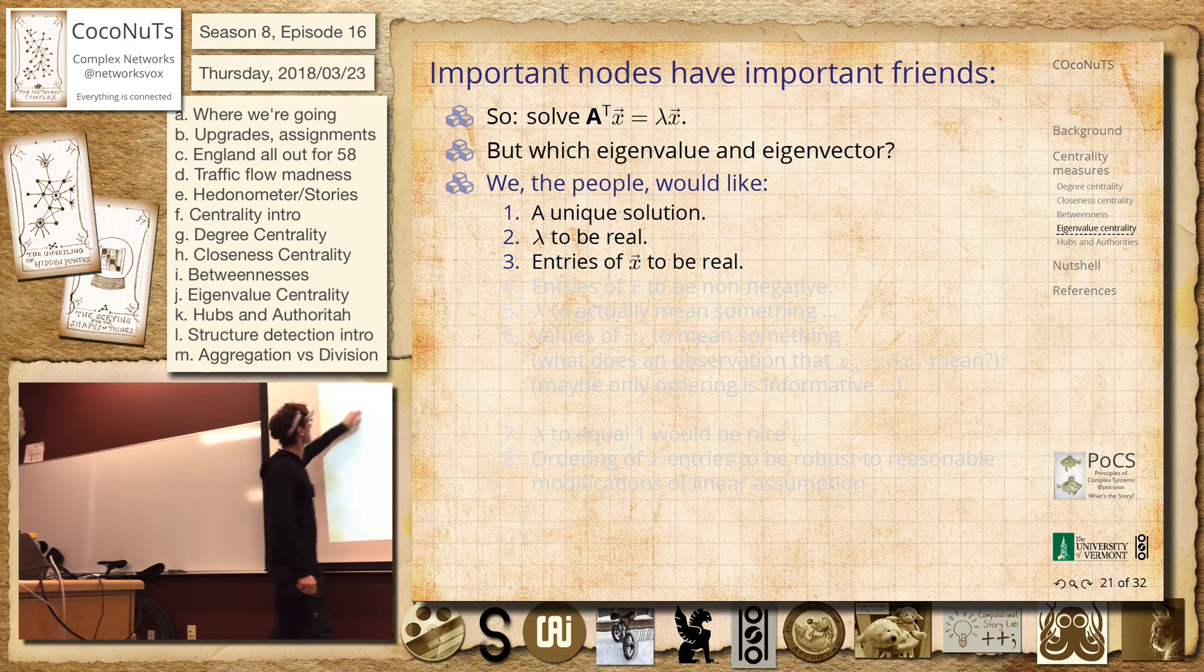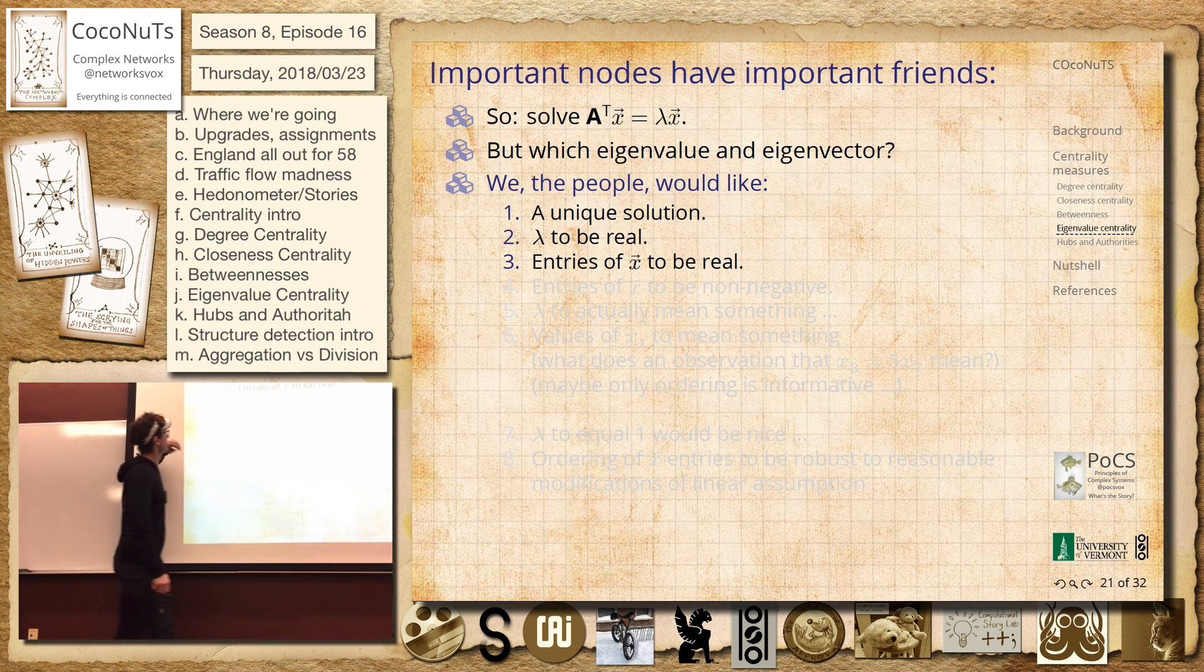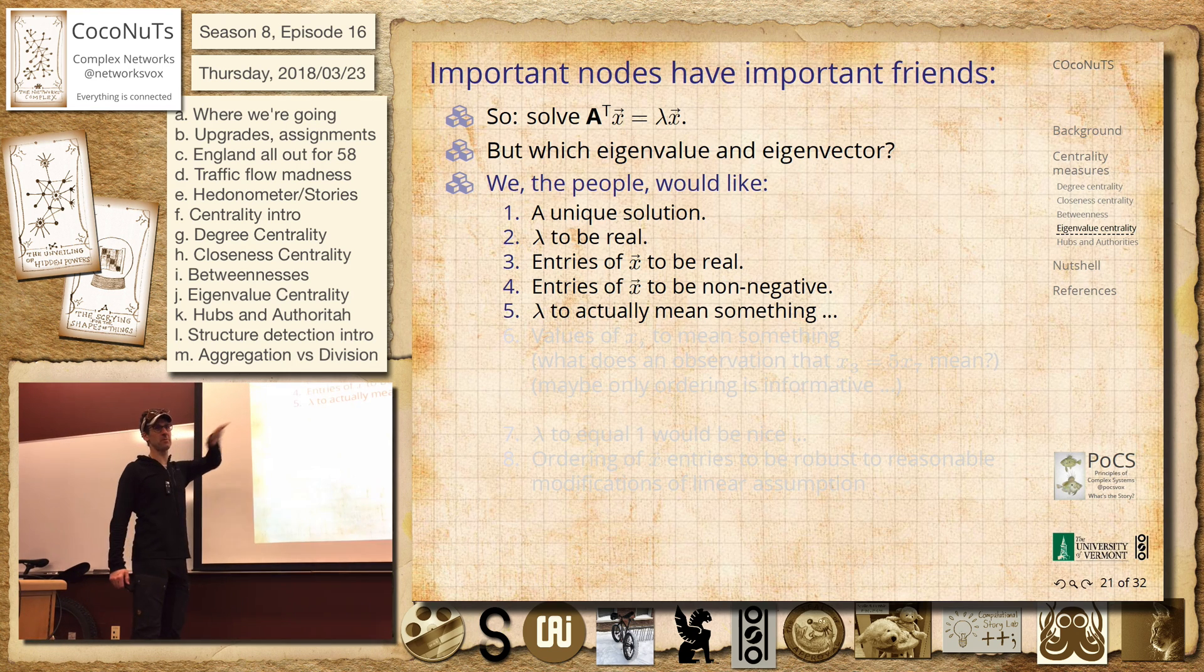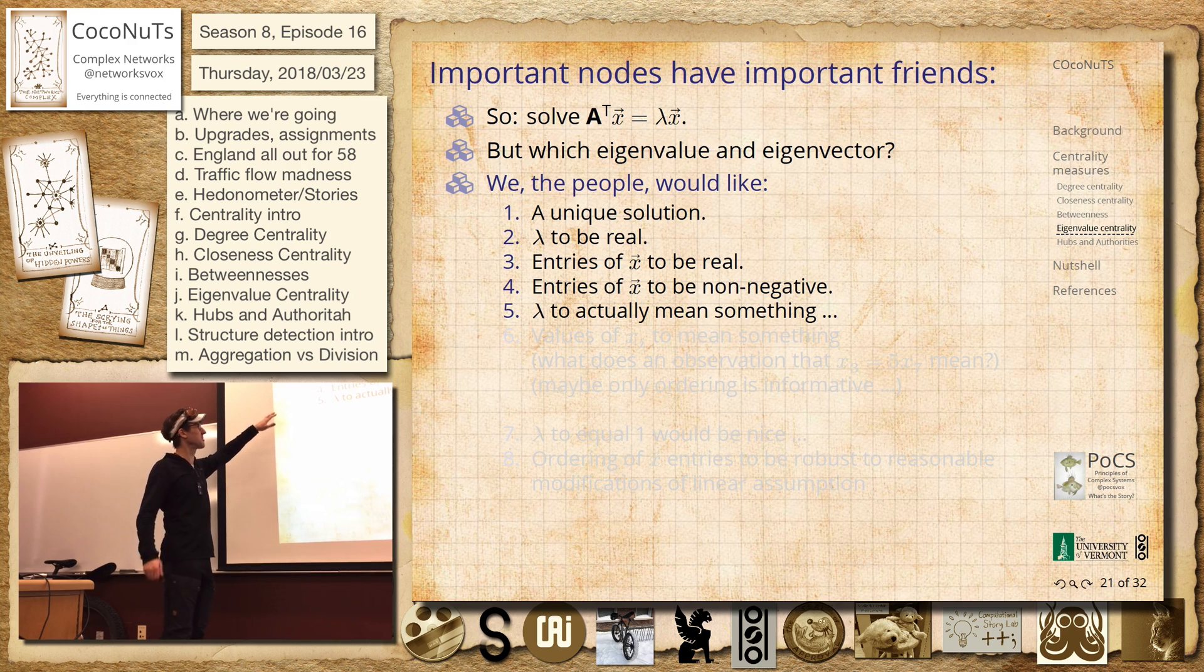Lambda being real, that would be helpful because if it's complex we don't even know what we're doing. It would be good if the entries were real. Non-negative would sort of help as well because that just sort of makes sense.